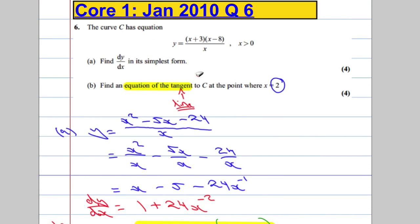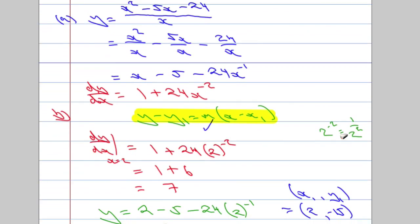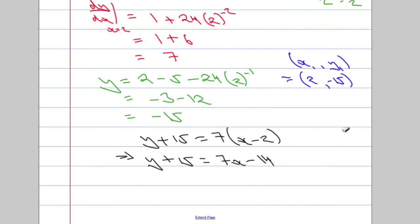And before we go ahead, let's see. Do I need to put it in any particular way? No, it doesn't ask me to write it in any particular form. The equation of the tangent, the equation of the line. So, I'm just going to write it in form y equals mx plus c. So, y is going to equal 7x. And taking 15 away from both sides, going to give us negative 29.